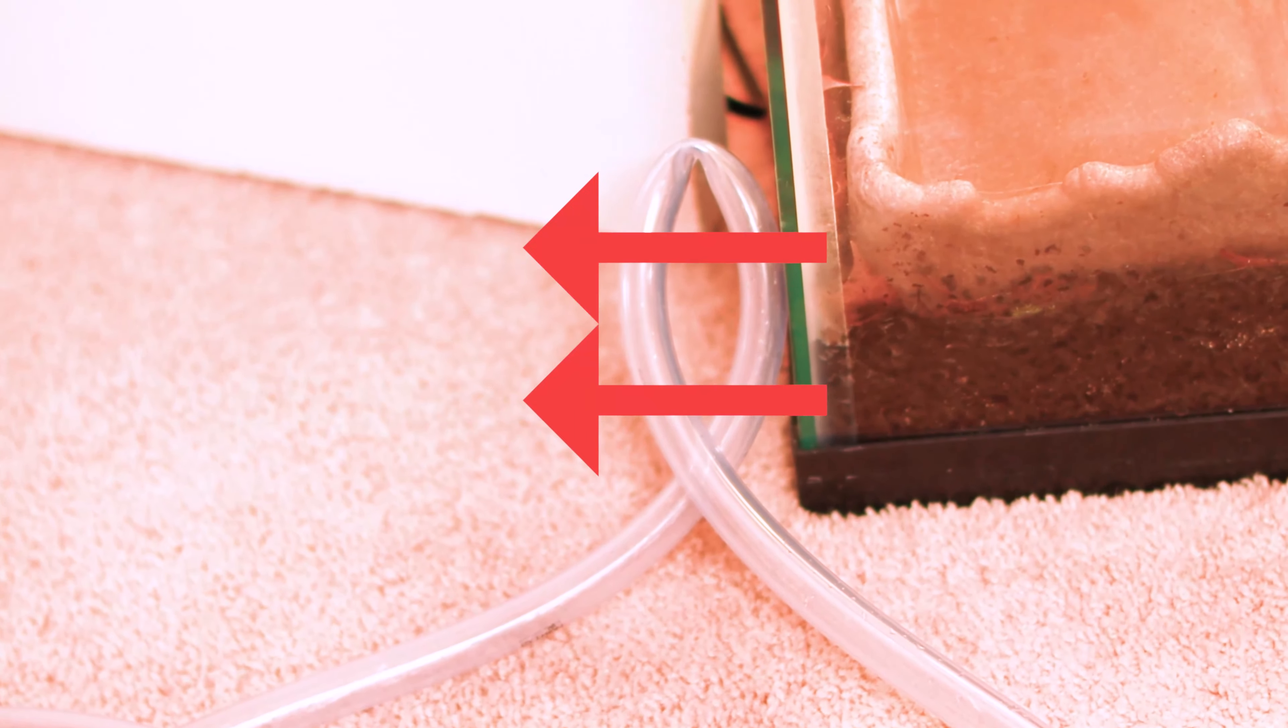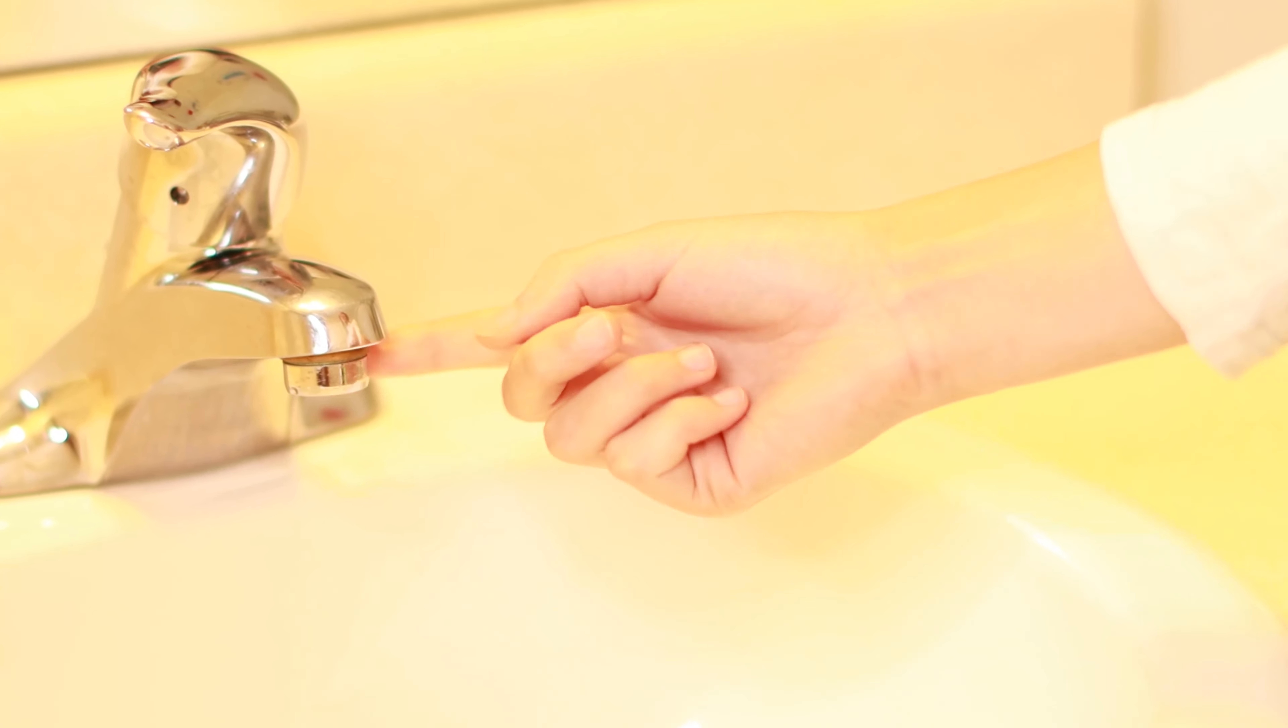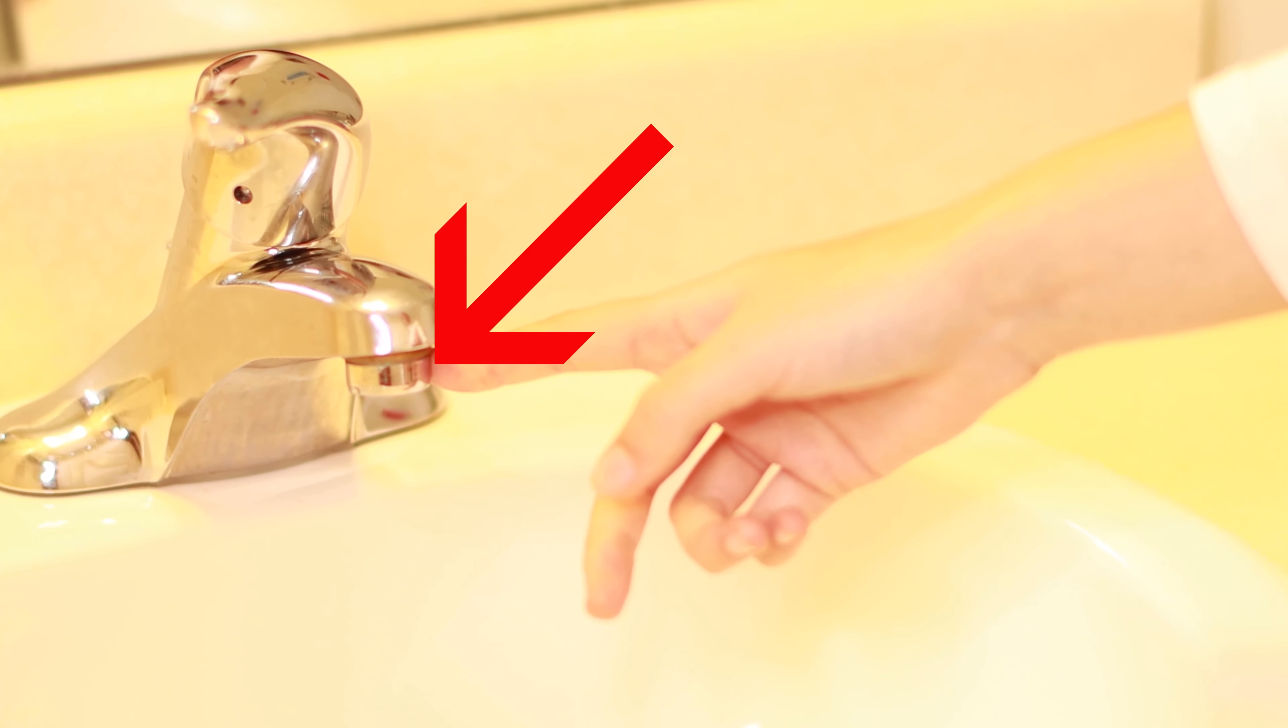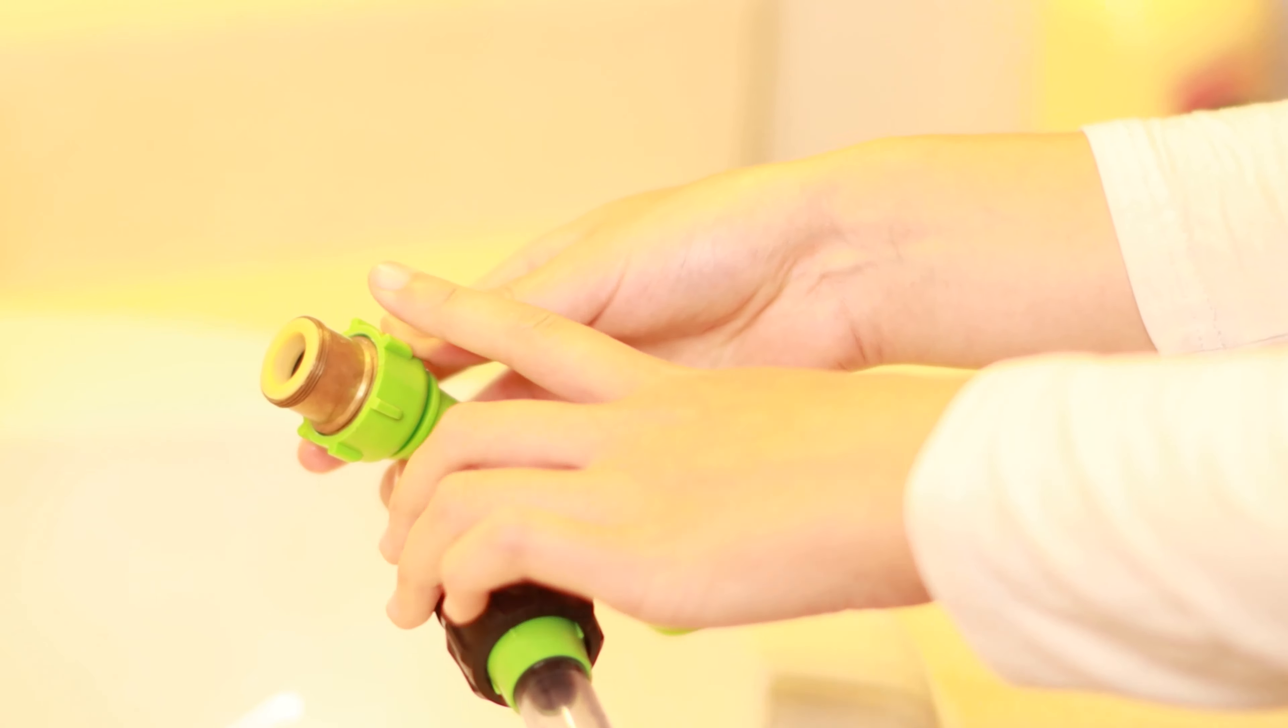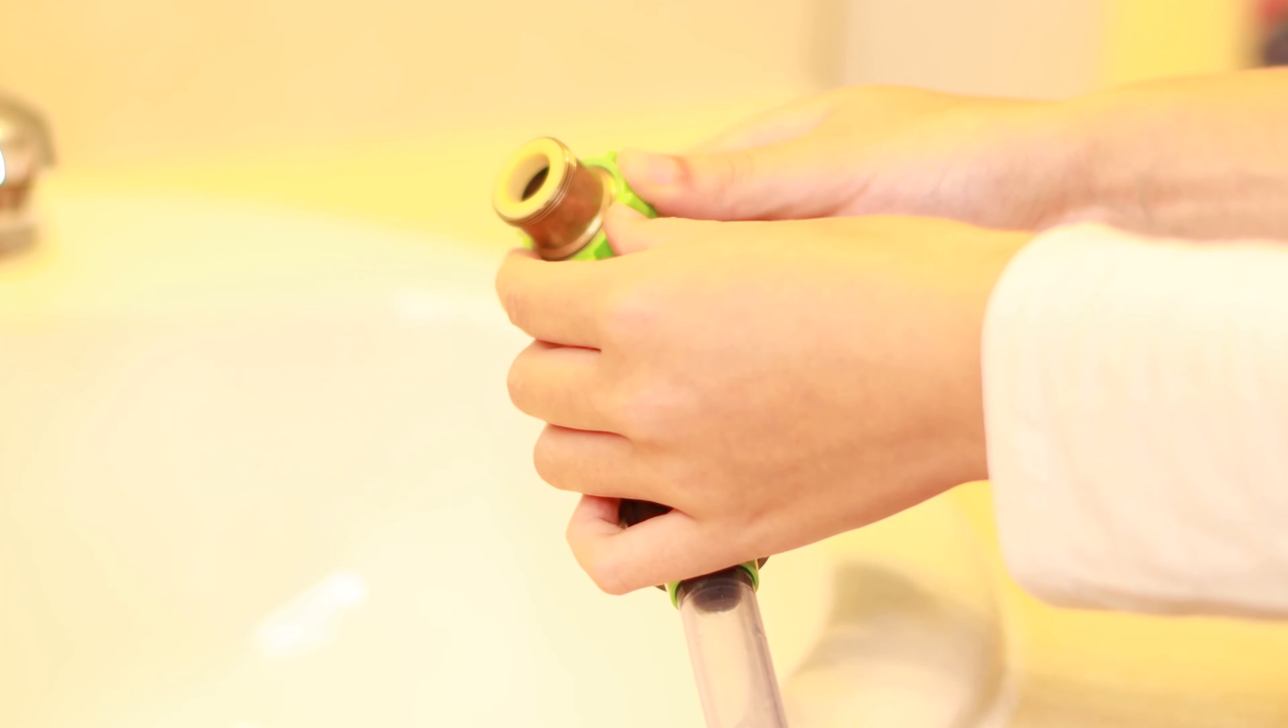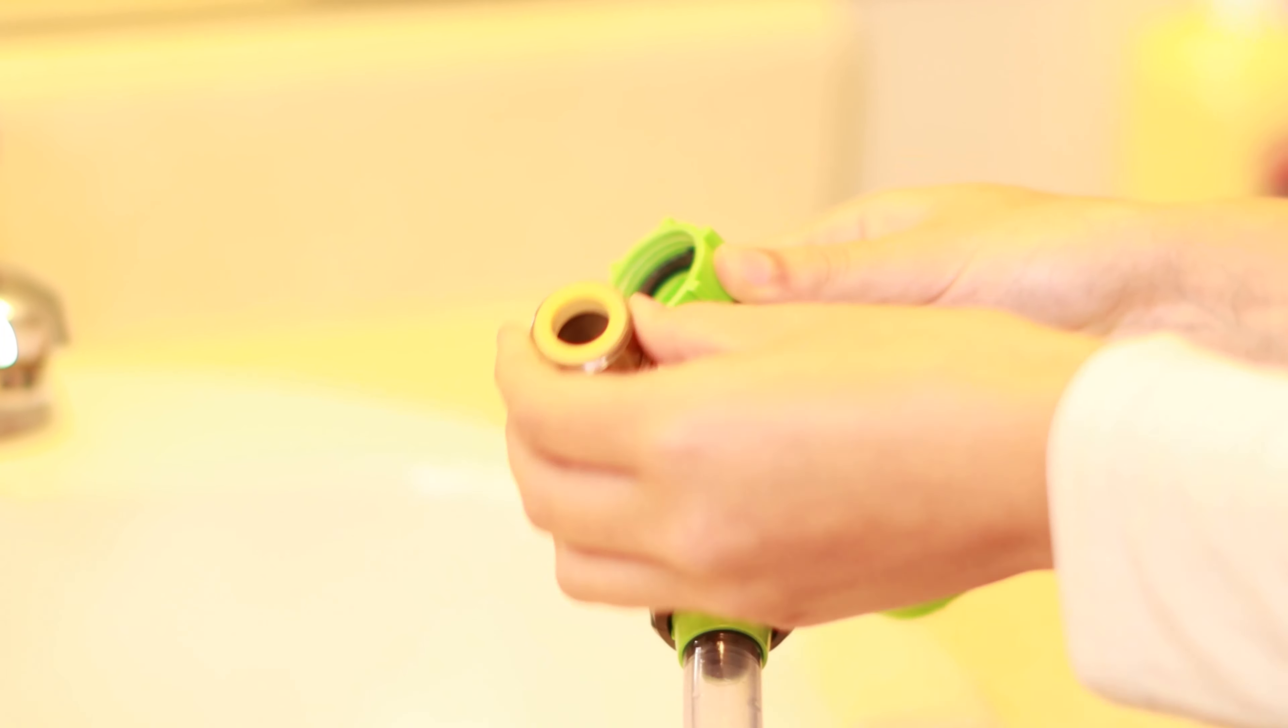Make sure there's not any tangles that will cut off the water flow. Make sure your hose is long enough to reach your nearest sink. In this case, it's my bathroom. Once you're at the sink, this part you have to remove so that we can attach this part onto the sink. First, let's unscrew this from the green part.